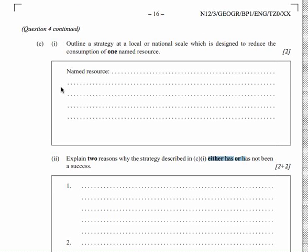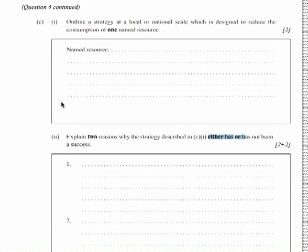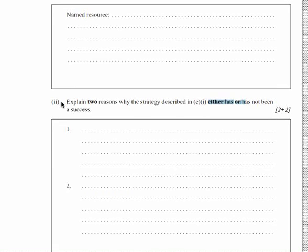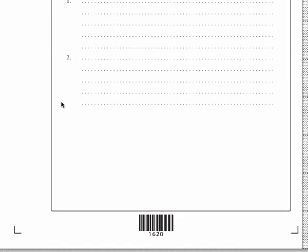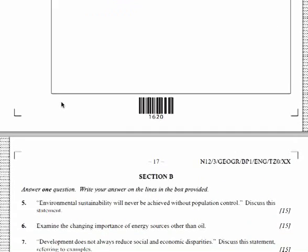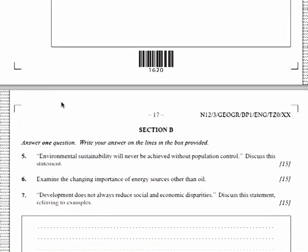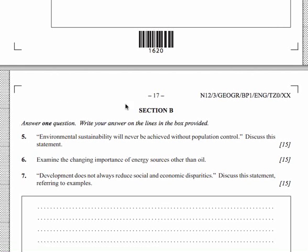It does say either it has been successful or has not been successful — so both a positive and a negative are allowed. But the really important thing is you have that tight link with what you said in part C1. I think we need to have a class discussion to be a little clearer about what those strategies are and simplify it a bit. Okay, that was the last one for Section A. The next video will go on to talk about Section B and look at the individual examination questions.